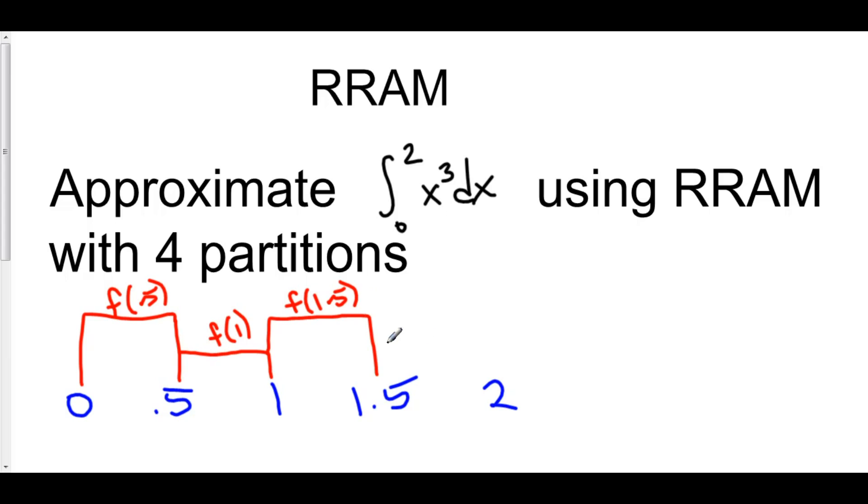And finally, our fourth rectangle goes from x equals 2 and on over. So the height of this rectangle is f of 2.